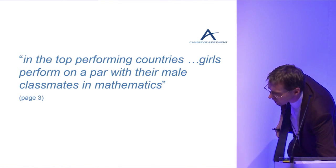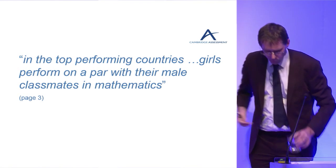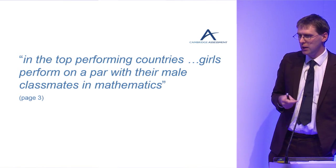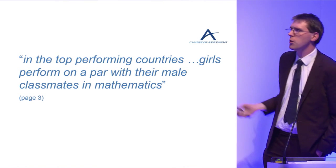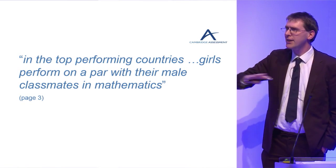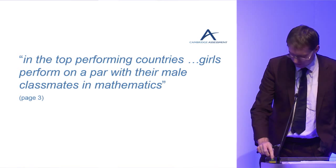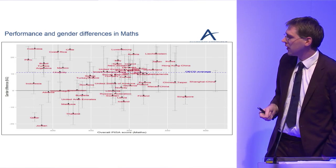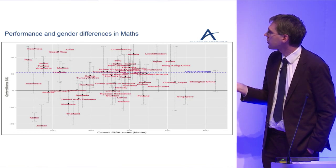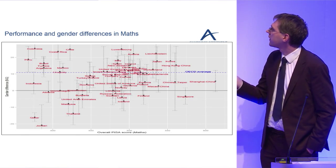The report starts to look at why we see these differences. One statement made is that in top-performing countries, girls perform on a par with their male classmates in maths — in other words, if you are in a high-performing country, you won't see these gender differences. I want to start by knocking that on the head: this is not true.